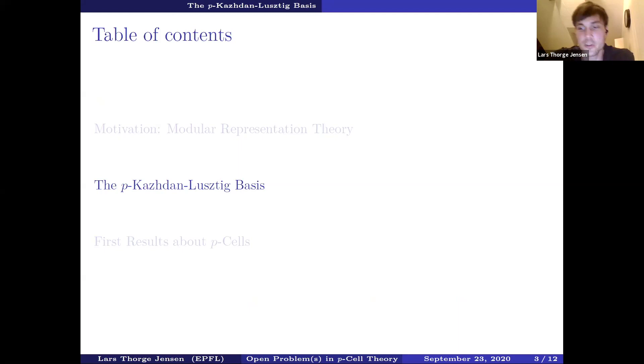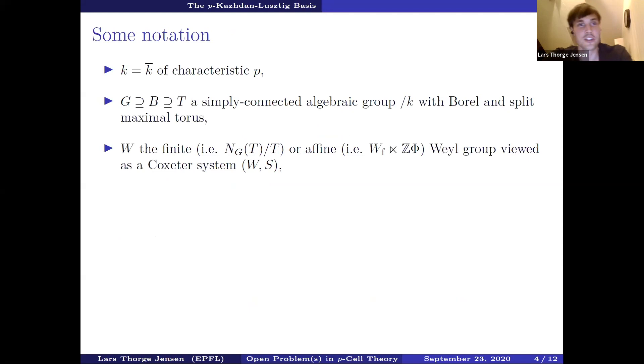So the p-Kazhdan-Lusztig basis. Where does this come from? Let me first introduce some notation. We'll fix an algebraically closed field K of characteristic p and also we'll fix a simply connected algebraic group G over K together with a Borel B and a split maximal torus T. W will be the finite or the affine Weyl group. So the finite is just the normalizer of the torus modulo the torus, or the affine Weyl group would be the semi-direct product of the finite Weyl group together with the root lattice.